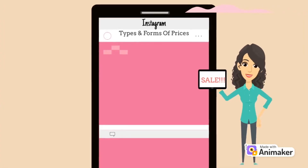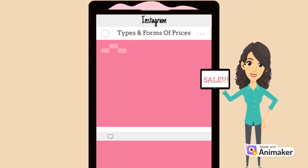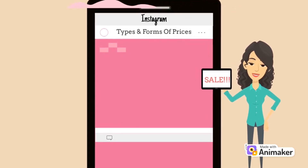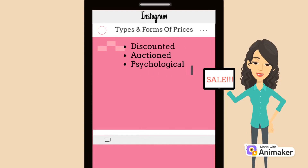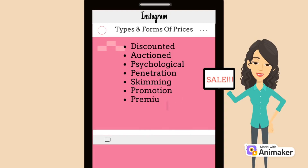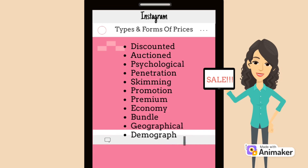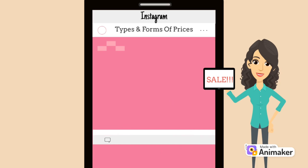We will discuss about the types and forms of price. There are 15 types of price. We have discounted, auctioned, psychological, penetration, skimming, promotion, premium, economy, bundle, geographical, demographic, freemium, FOB, seasonal, and subsidies.